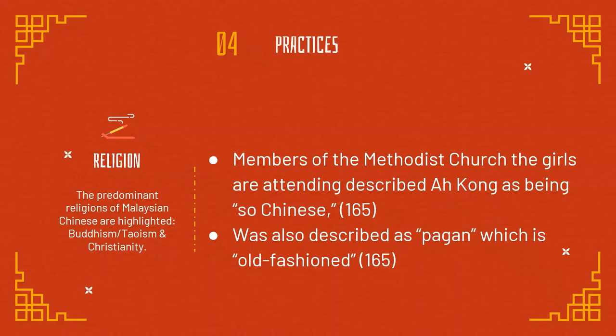The next practice is religion. The author highlights the predominant religions of Malaysian Chinese: Buddhism and Christianity. Buddhism is seen as the second largest religion in Malaysia, paralleling how Chinese are the second largest race in Malaysia. Based on page 165, members of the Methodist church described Ah Kong as being 'so Chinese,' and he is also described as pagan — meaning old-fashioned. Thus, Ah Kong is Buddhist while the rest of his family are Christians.